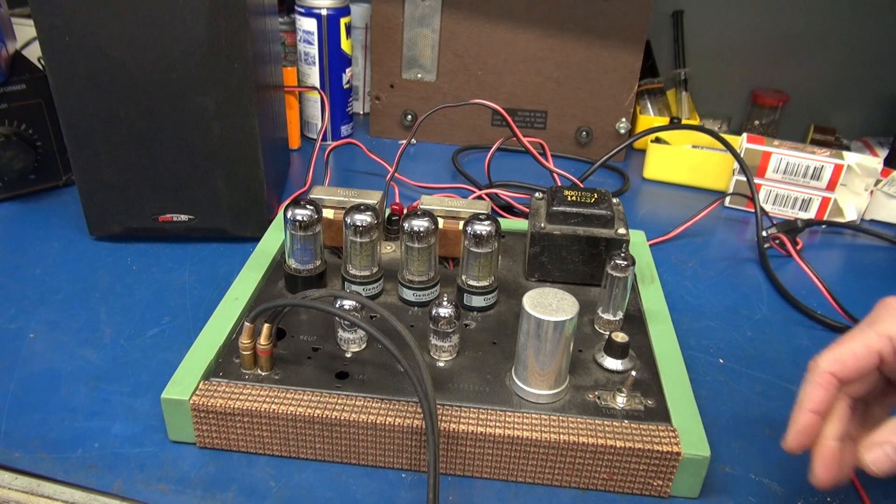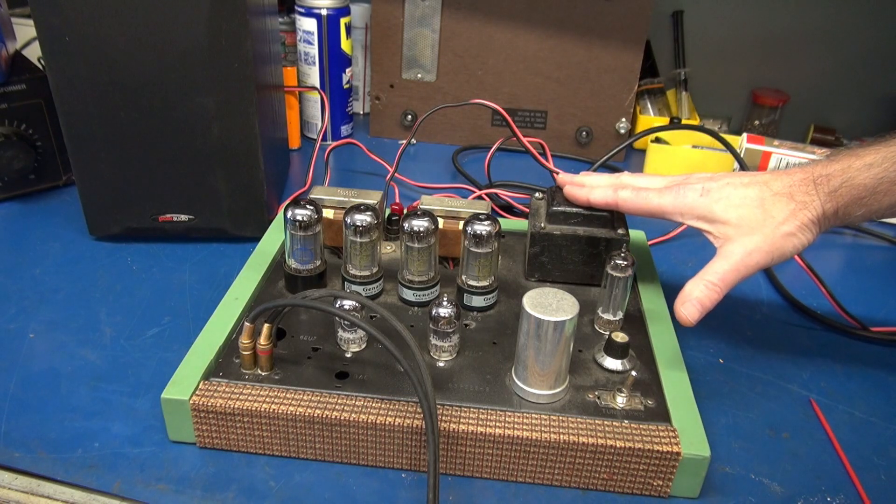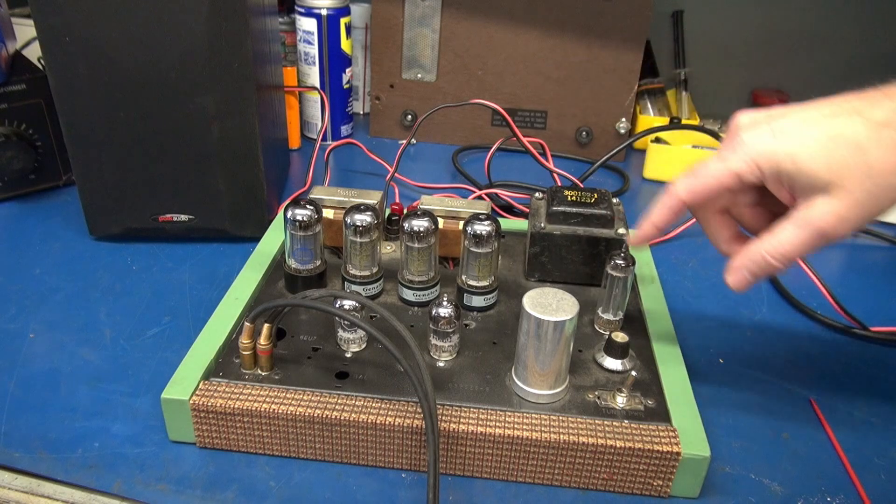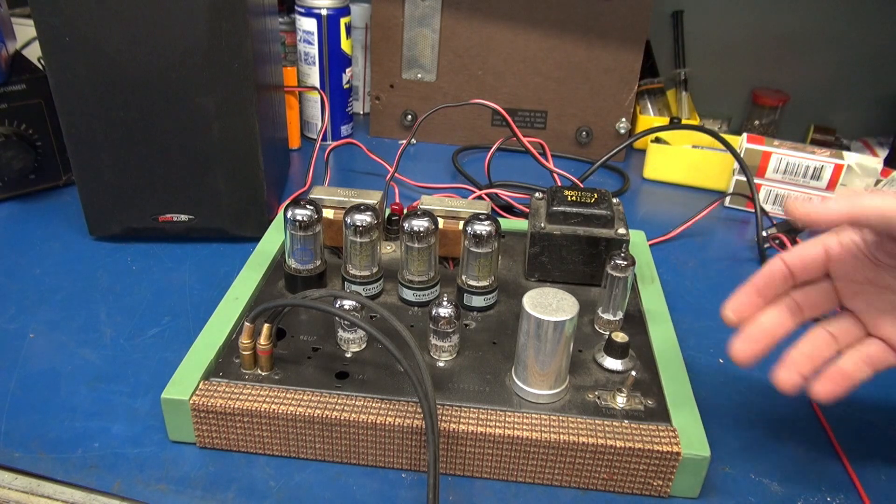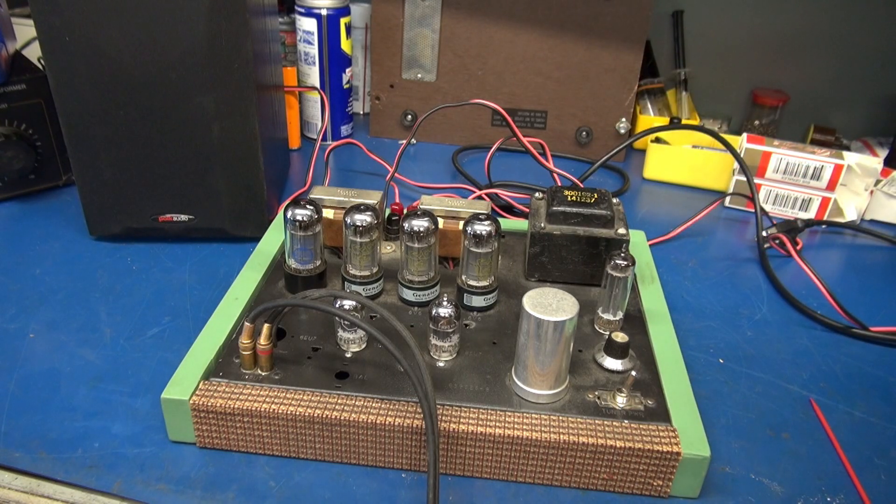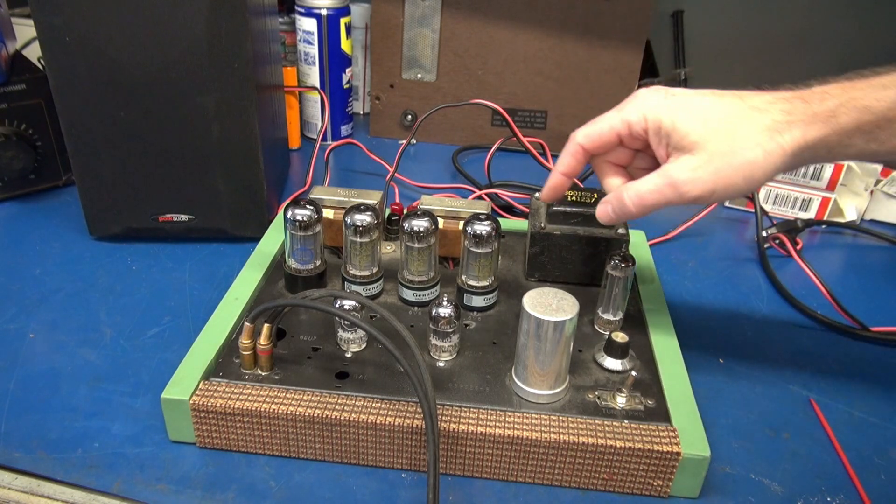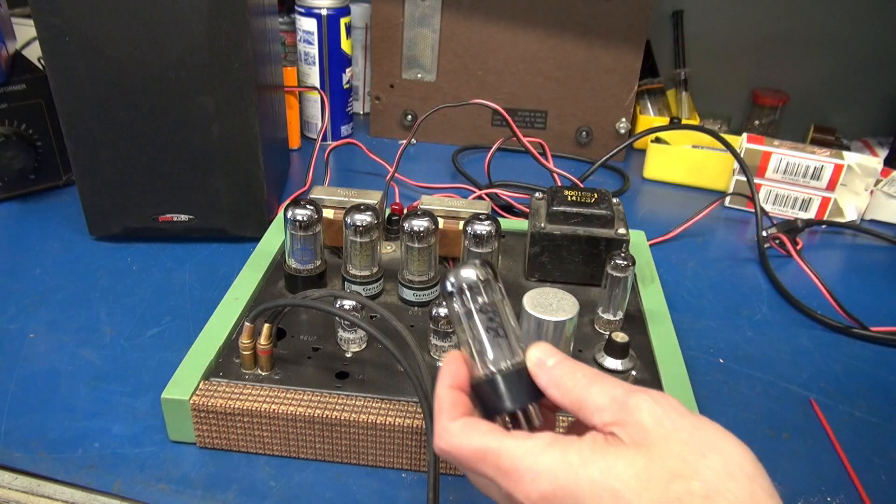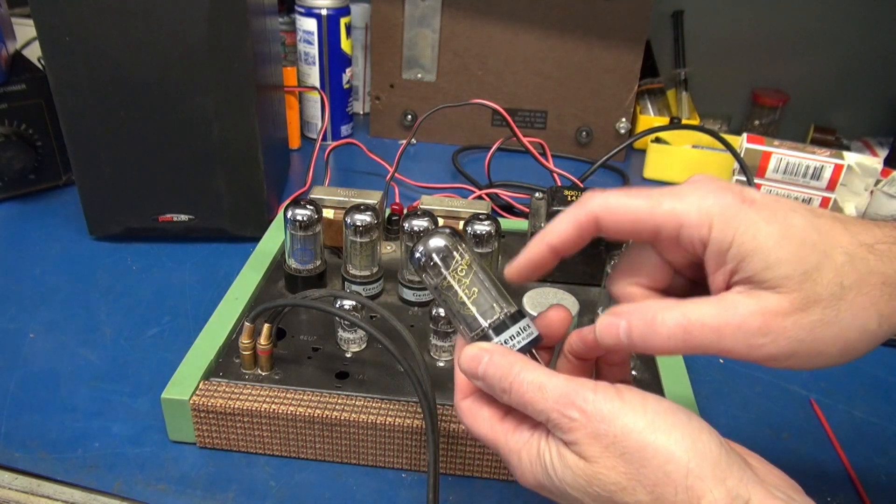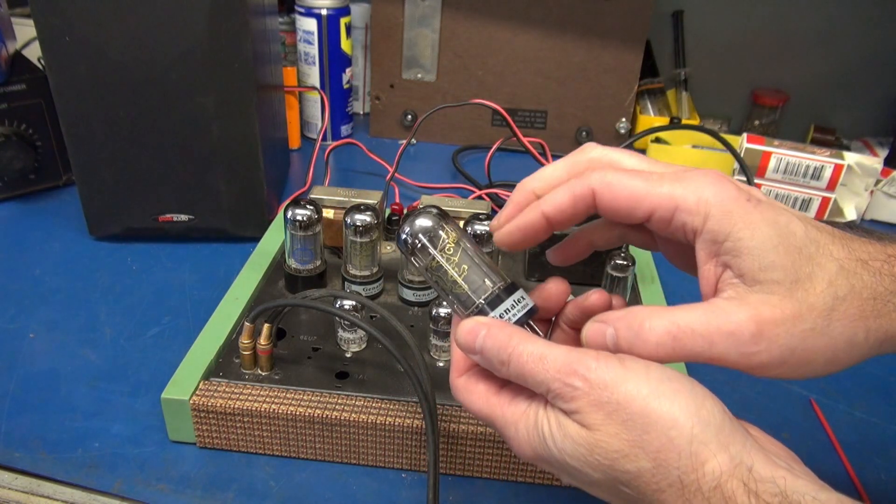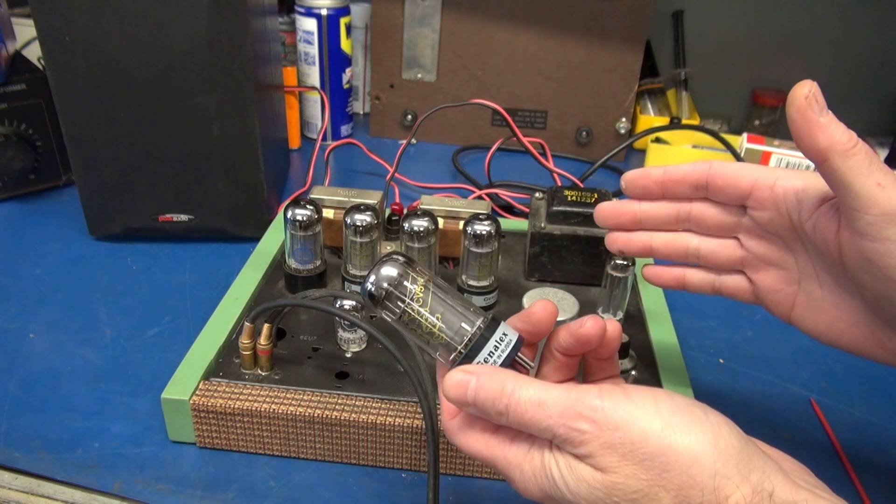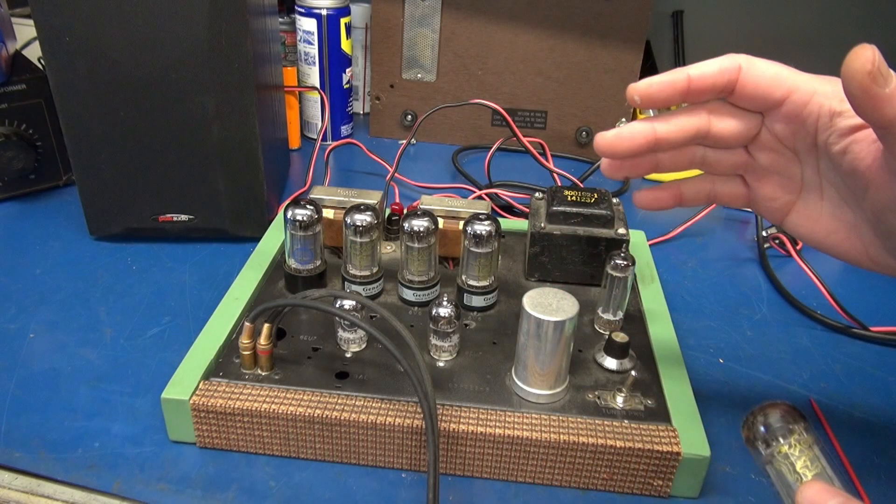What guys are doing is they remove these from those old console radios, build a cool frame around them, and then have them on the bench to play their favorite vinyl. Now in this case there were four Genlec 6V6's. I already determined that this one was very sensitive to touch causing the distortion.